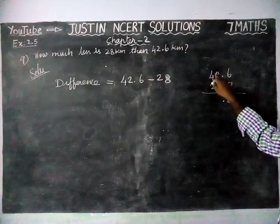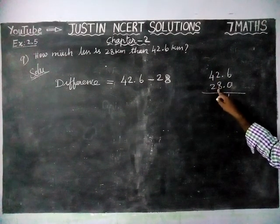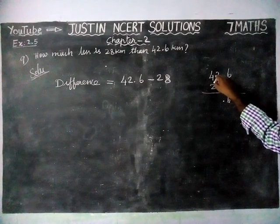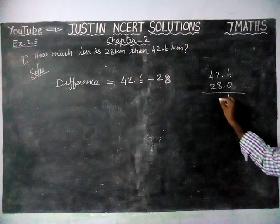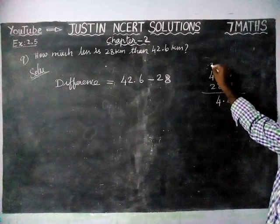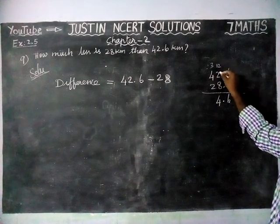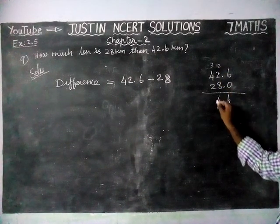Decimal part. But here, we have 2. We cannot subtract 8, so we are borrowing from here. 12 minus 8 is equal to 4. And now, this is only 3. 3 minus 2 is equal to 1.